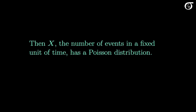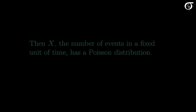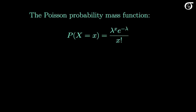If these conditions hold, then the random variable x, which represents the number of events in a fixed unit of time, has the Poisson distribution. Here's the probability mass function for the Poisson distribution, which we use to calculate probabilities. The probability the random variable x takes on the value little x — sometimes written as p of little x — is equal to lambda to the x times e to the minus lambda over x factorial.